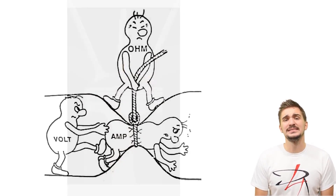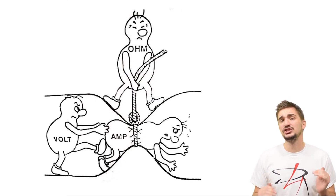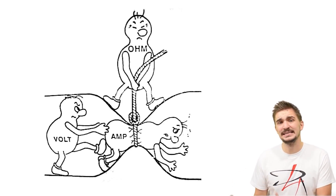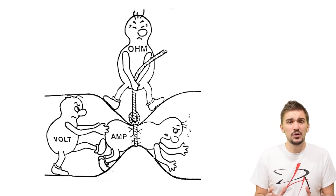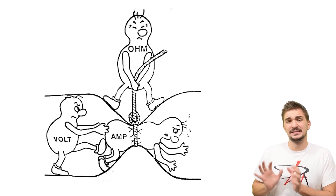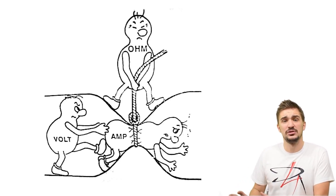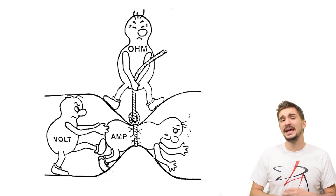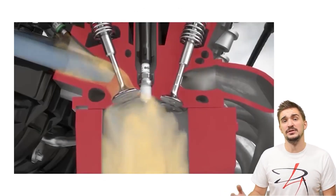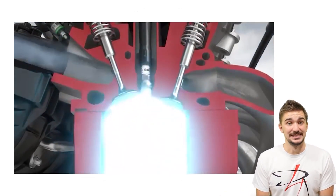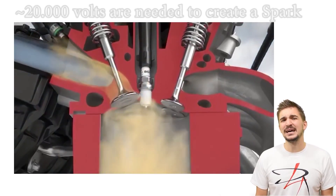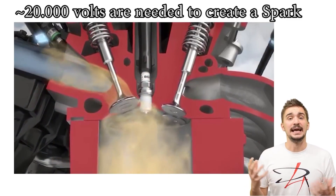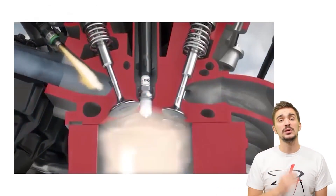For this to happen we need a lot of voltage. Voltage is essentially a difference in potential between two points, but it can also be explained and visualized as a force or pressure being exerted onto the electrons, forcing the current to flow and overcome any insulation — even that of air and fuel. A lot of voltage is needed: typically around 20,000 volts are needed for the spark plug to arc and create an actual spark.